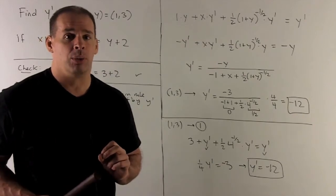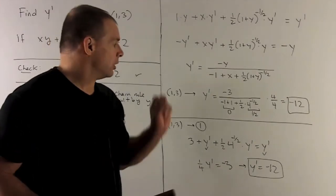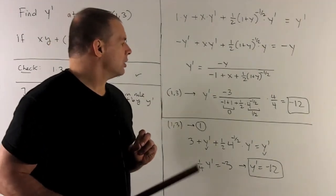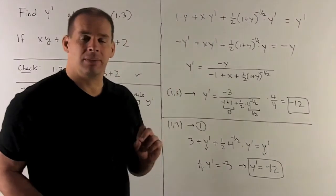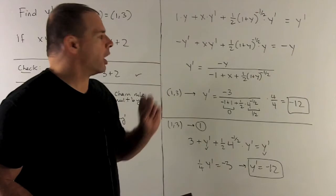Now all I need to do is put one and three in. That gets me my answer, which has to be a number. So notice what's going to happen. In the top, that'll be a minus three. When I put one into the bottom, we're going to have a minus one and a one. It goes away to give me a zero.